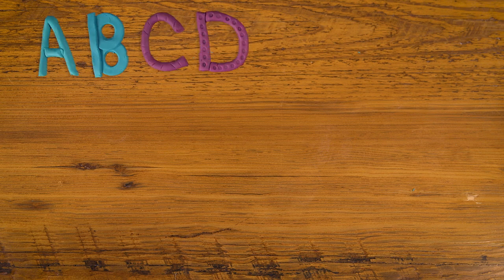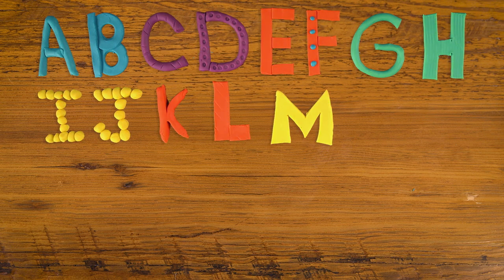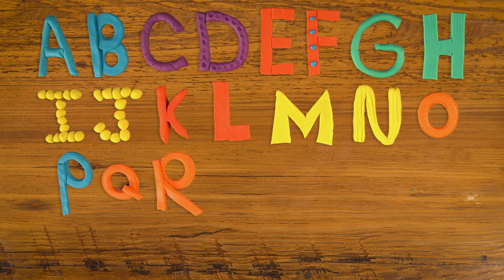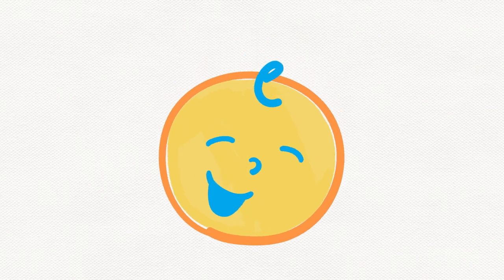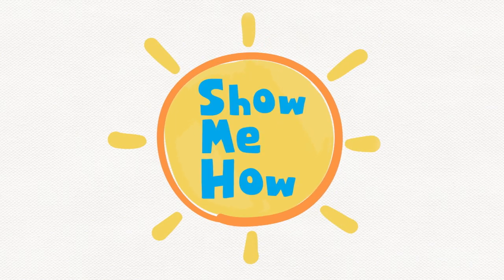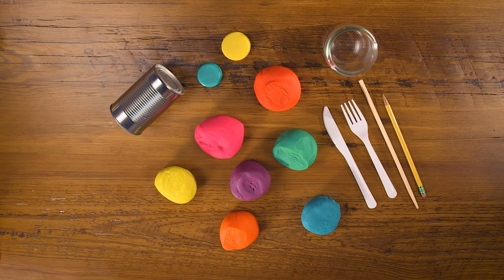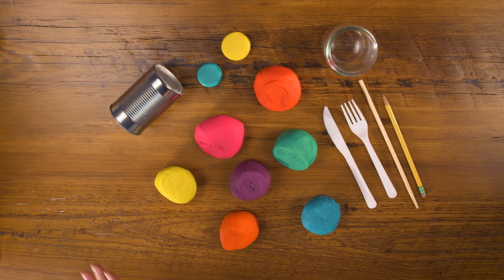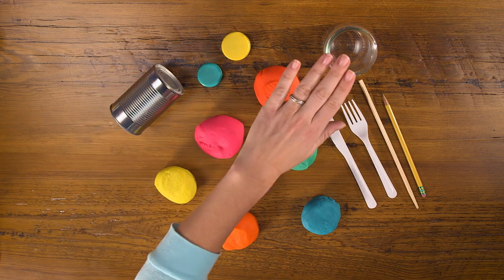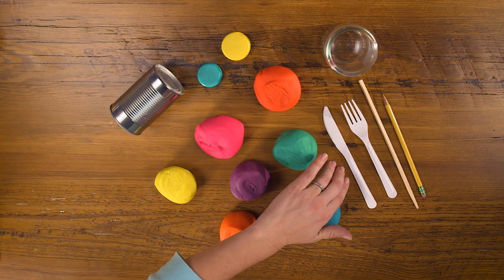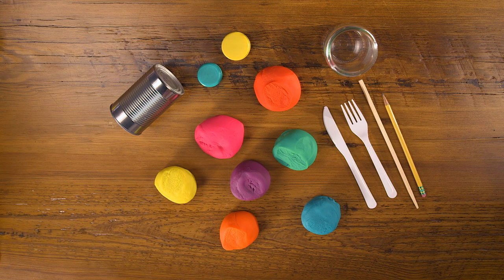If your child is learning their ABCs, making the alphabet out of Play-Doh or modeling clay is a great activity to help them learn. It's fun and easy. To make our Play-Doh alphabet, you need Play-Doh and some tools. You can buy Play-Doh tools at a toy store, or you can use things lying around the house.